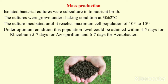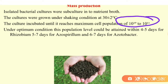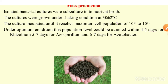The maximum cell population of 10^11 will be achieved within 4 to 5 days for Rhizobium, 5 to 7 days for Azospirillum, and 6 to 7 days for Azotobacter. According to that we have to incubate.